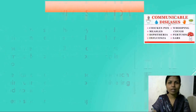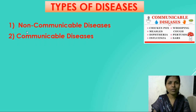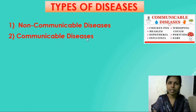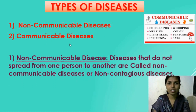The next part we are going to learn in this lesson is the different types of Diseases. So let's see what are the different types of Diseases. The first one is Non-Communicable Diseases and the second type is Communicable Diseases. So there are two different types of Diseases: Non-Communicable Diseases and Communicable Diseases.